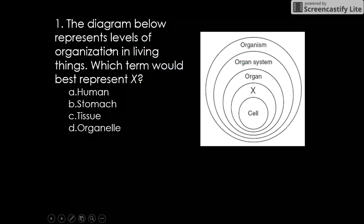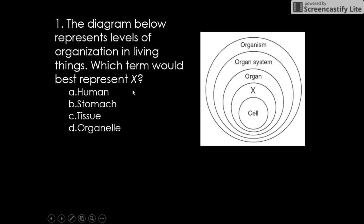The diagram below represents levels of organization in a living thing. Which item would best represent X? So if we have cell, we're going to take one step above that to something that's just a little bit bigger than a cell. If you look at your notes that you just should have written down, you will see that the next step up is tissue.